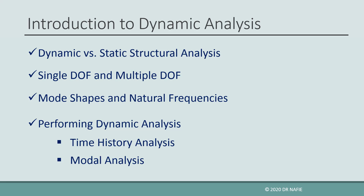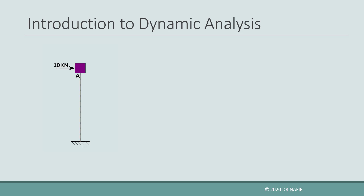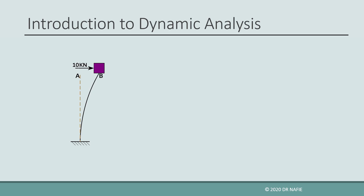Let us first explain what is meant by dynamic analysis. For the shown cantilever with the mass on top, if we instantaneously apply a 10 kilonewton force on the mass, the cantilever will deflect and will generate internal forces. When the mass reaches point B, the internal forces generated in the cantilever will be in equilibrium with the external 10 kilonewton force, and in theory the cantilever should stop moving.